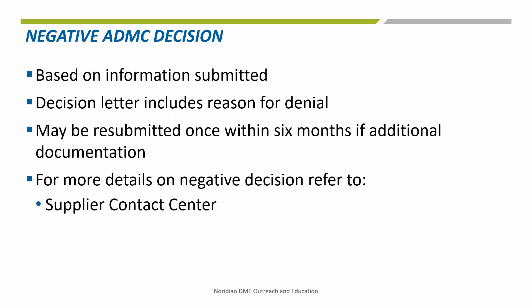A negative ADMC decision communicates to the supplier and the beneficiary that, based on the information submitted with the request, the beneficiary does not meet the medical necessity requirements that Medicare has established for the item. The negative ADMC decision should indicate why the request was denied. Requests may be resubmitted once during a six-month period for a negative ADMC decision if additional medical documentation is supplied. Call the supplier contact center for additional questions regarding an ADMC decision.